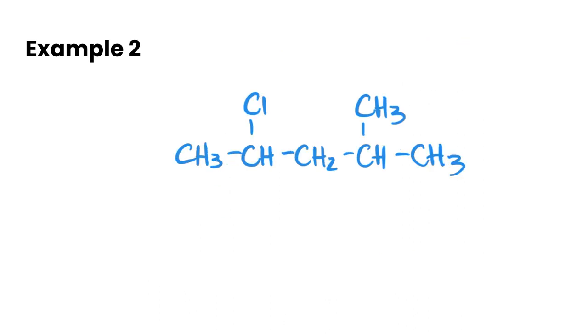Here's the second example. Let's again take a look at our longest continuous chain. I'm going to go 1, 2, 3, 4, and then either way I go it's going to be 5, so I'm just going to go straight to make it easy. We've got a methyl group attached and a chloro group attached.